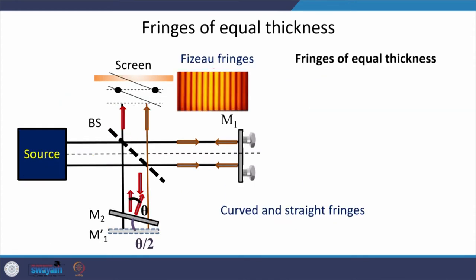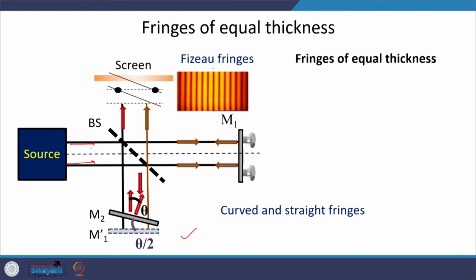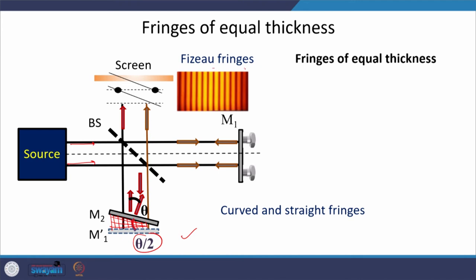The next case involves deliberately tilting one of the mirrors while launching a parallel beam of light. This makes the air film between the two mirrors wedge-shaped. In this figure the mirror is tilted by θ/2, so the angle between the vertical and the reflected ray is θ. The air film is now wedge-shaped, and as we have already studied, the fringe pattern for a wedge-shaped film consists of straight-line fringes — these are called Fizeau fringes or fringes of equal thickness.